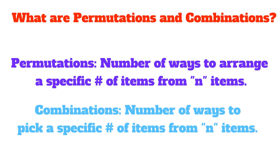What are permutations and combinations? Permutations refer to the number of ways to arrange a specific number of items from n items. On the other hand, combinations refer to the number of ways to pick a specific number of items, also from n items.